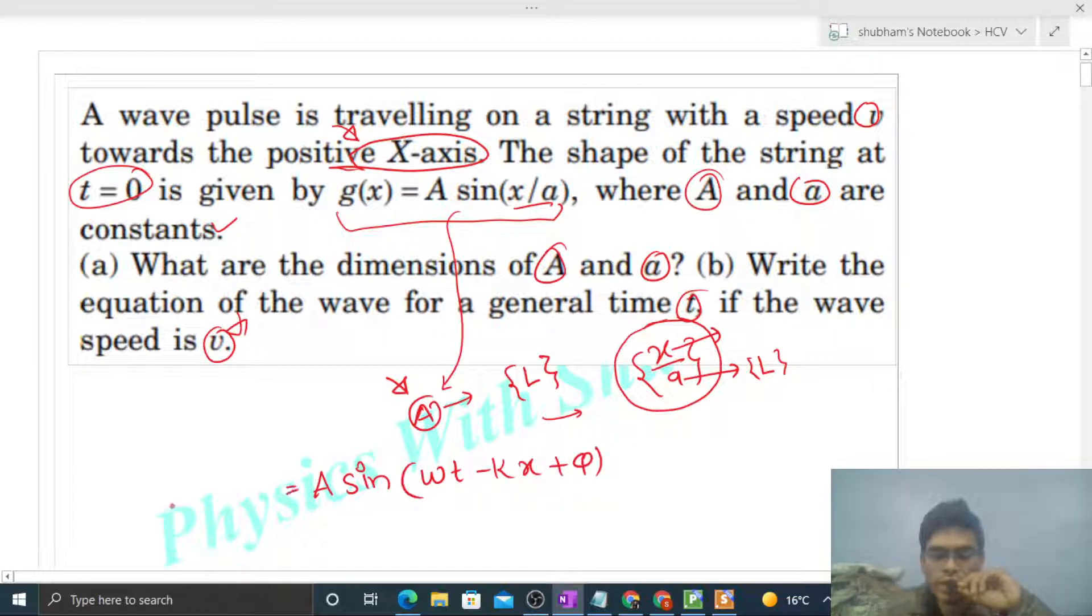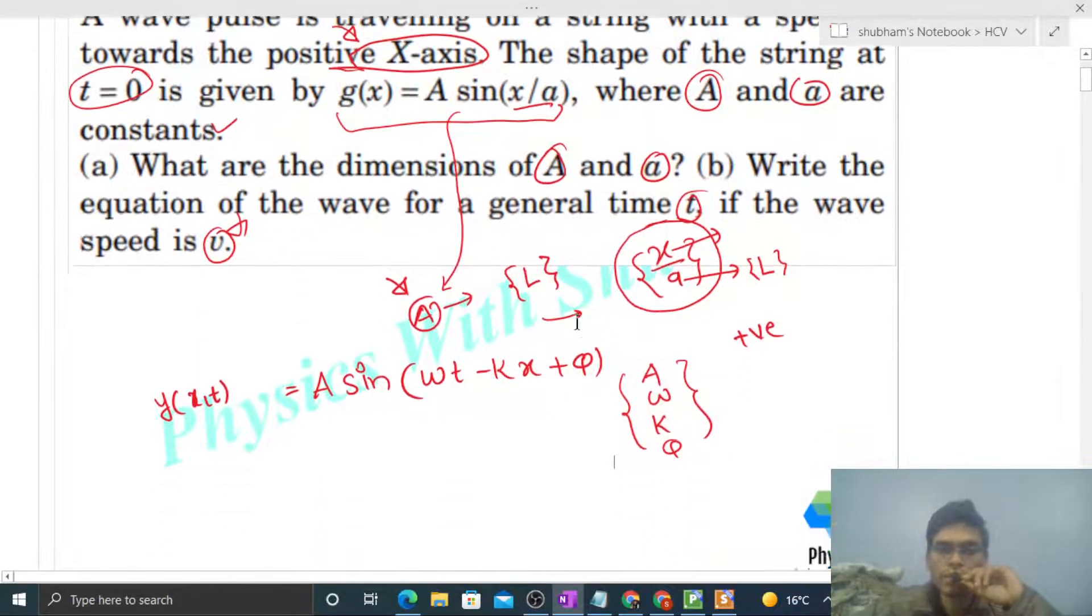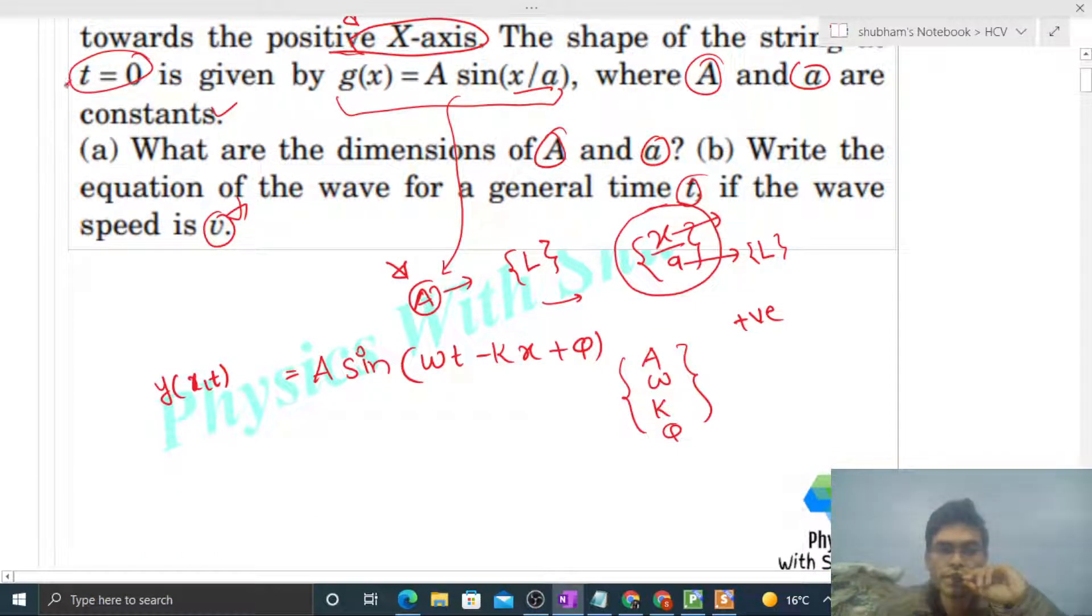That is A sin(omega t minus kx plus phi). Isi tarah se hum wave ka equation likhte, standard form mein, the wave which is moving towards positive x-axis. Now equation likhne ke liye aapko amplitude pata hona chahiye, omega k pata hona chahiye, k pata hona chahiye, and phi pata hona chahiye.